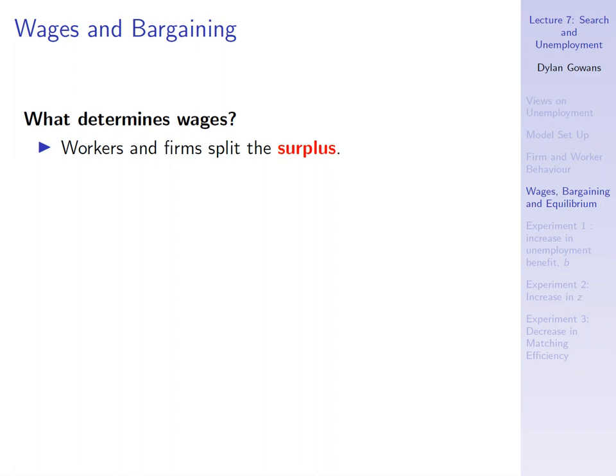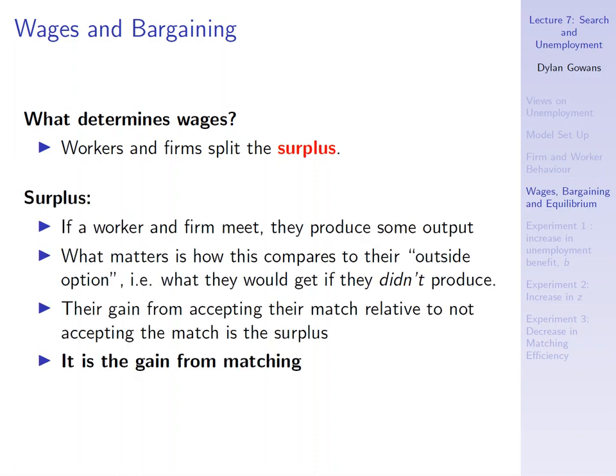The answer is that workers and firms split the surplus. What's surplus? If a worker and a firm meet they produce some output, but what really matters is how this compares to their outside option — what they would get if they didn't produce. For example, if you offer me $100 for working for you, but if I didn't work for you I would get $98, then the surplus to me from that match isn't very big. The surplus is the gain from accepting the match relative to not accepting the match.